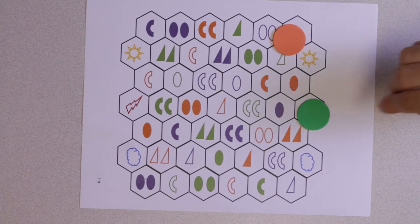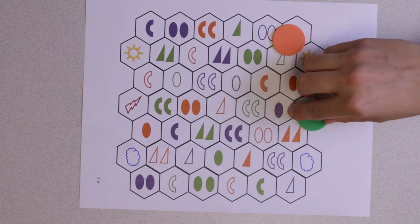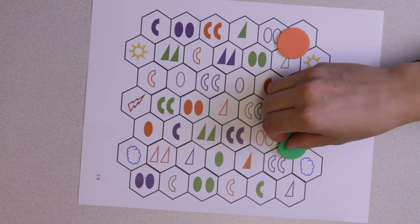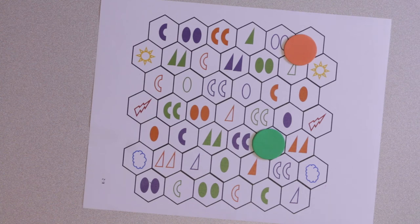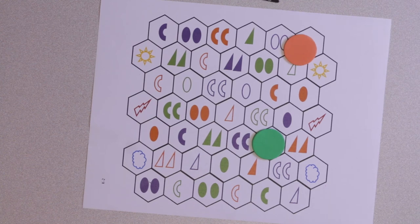Next is green. Green rolls a 2. Green uses their first move to move onto the board. They move onto the orange triangles. Then they can move to the orange ovals because they share the same color and the same number of shapes. Remember that in this game, we only need one attribute in common. This one just happens to have two in common.